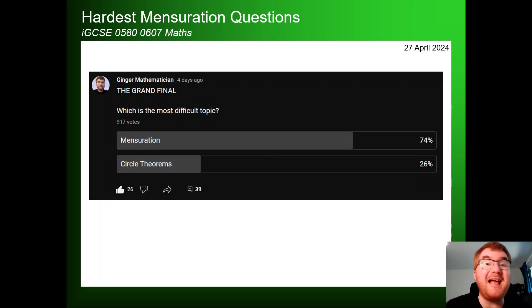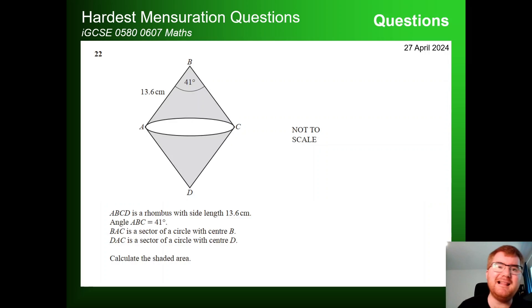Hello and welcome to another Ginger Math Petition video. It's now literally days until your IGCSE exams and we had just the grand final of which is the most difficult topic that you find. Thank you for 917 votes on this and you can see mensuration won this with a whopping 74% over circle theorems. So you've asked for mensuration questions. I picked out two of the hardest questions I can find, also dipping into other topics as well, particularly on paper four. So let's get started.